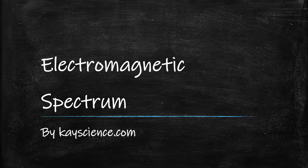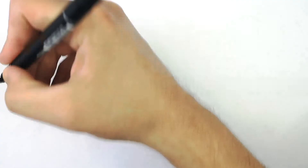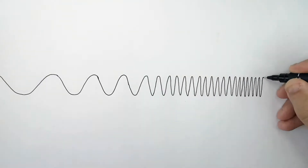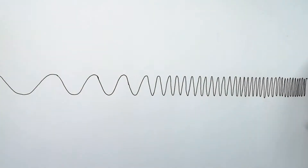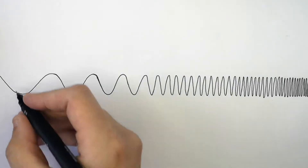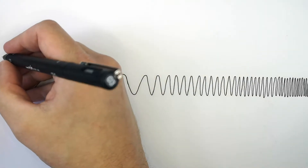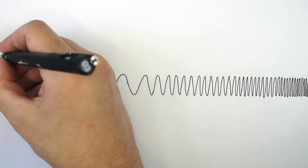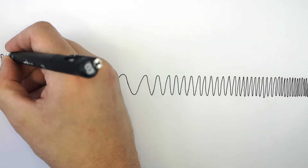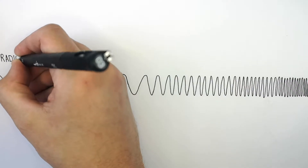Introducing the electromagnetic spectrum by kscience.com. This here is the electromagnetic spectrum that I'm drawing. This part of the electromagnetic spectrum is where you find the longest wavelengths. This is where you find the radio waves.